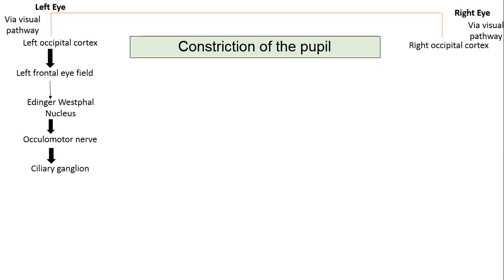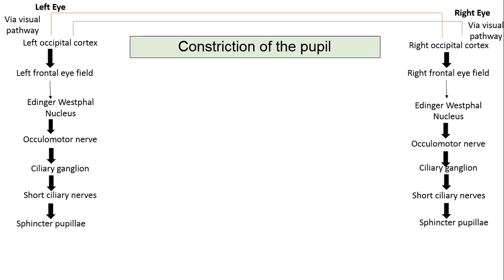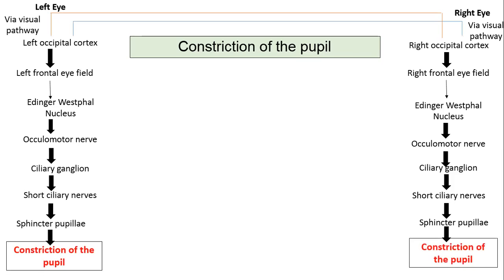These preganglionic fibers pass through the third cranial nerve to reach the ciliary ganglion. The postganglionic fibers from the ciliary ganglion pass via the short ciliary nerves and supply the sphincter pupillae muscle, causing its contraction. The same events occur in the right eye simultaneously, resulting in contraction of the sphincter pupillae muscle in both eyes, which causes constriction of the pupil in both eyes.